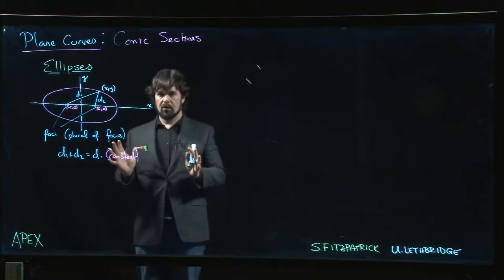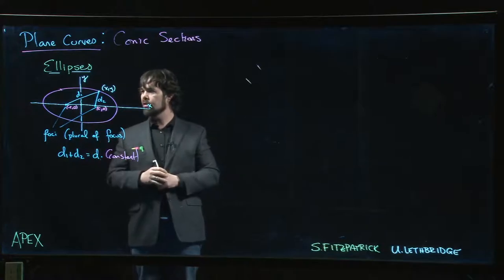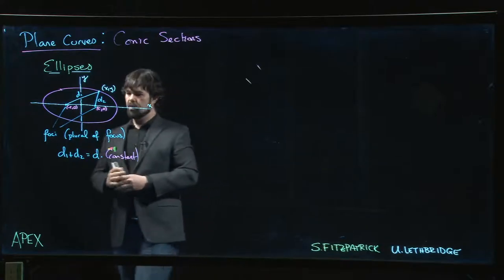All right, so the next conic section that we want to look at is the ellipse. The ellipse is defined as follows.